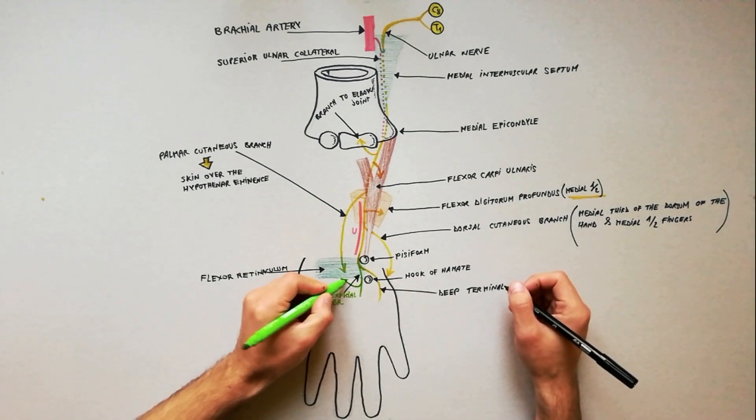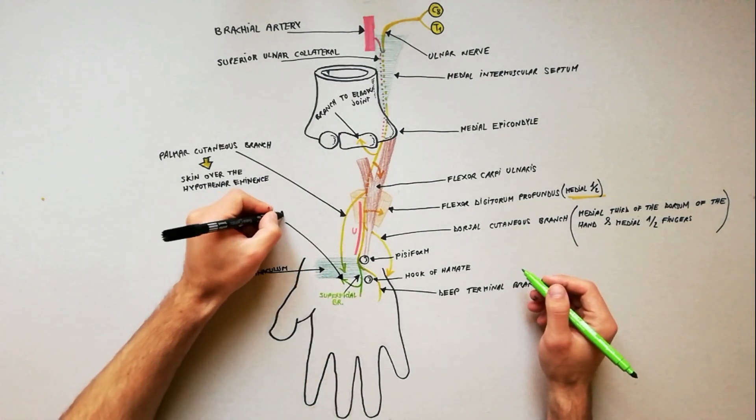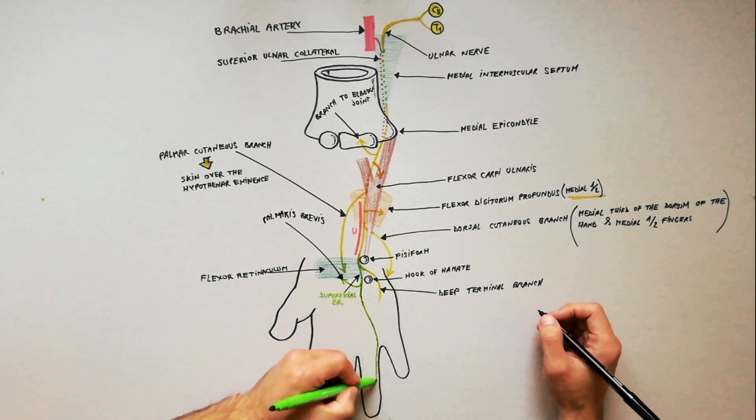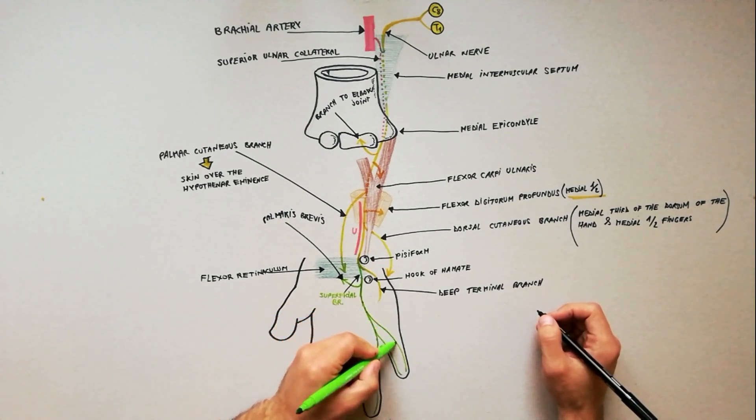The superficial terminal branch supplies palmaris brevis and gives off digital branches to skin on the palmar surface of medial one and a half fingers.